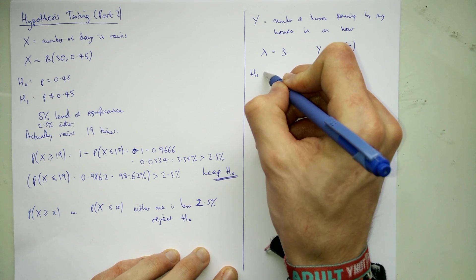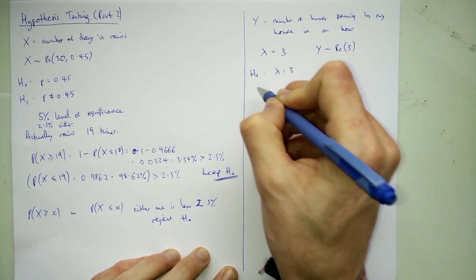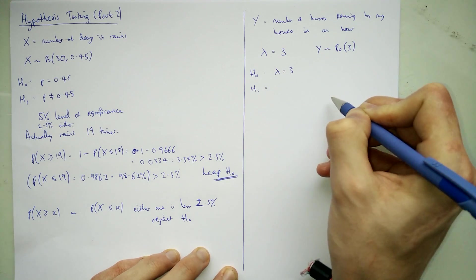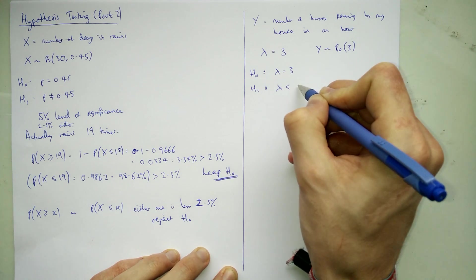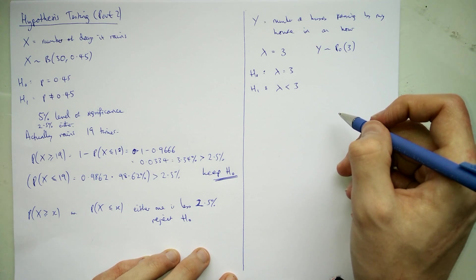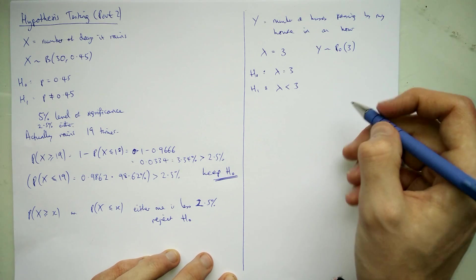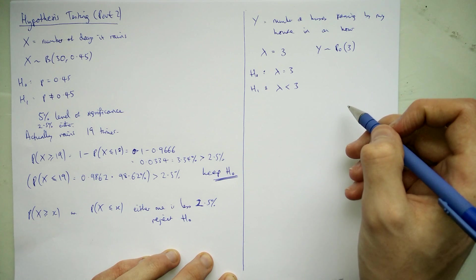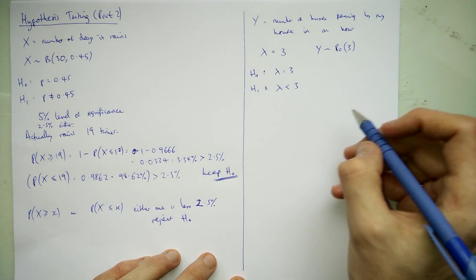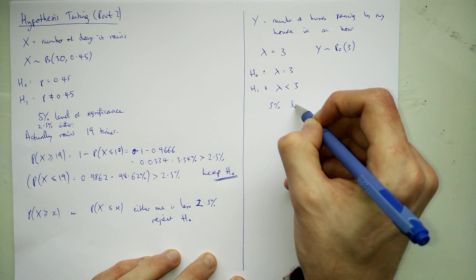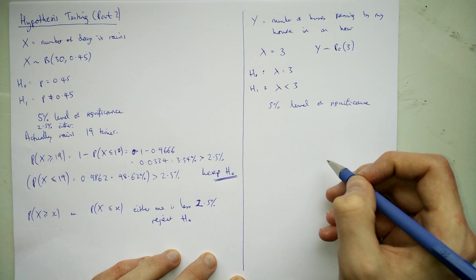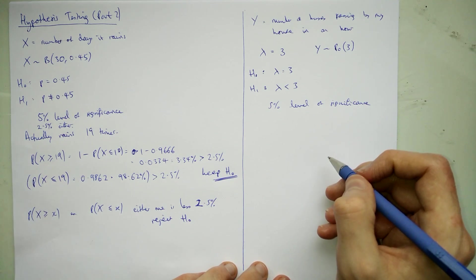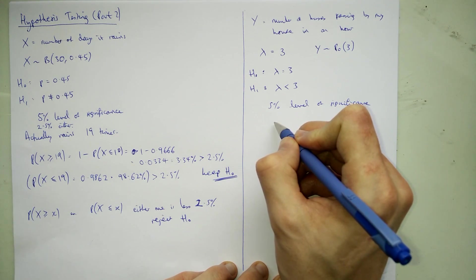So that H0 is that lambda equals 3. Now, I'm counting and I'm not seeing very many at the minute. So this would be a colon, not an equal sign. And so I think this is probably actually slightly more than it is nowadays. It's been reduced bus routes. So we're going with H1 being that lambda is less than 3. We'll do a 5% level of significance again. And I've counted the last hour how many came past and it turned out that it was just 1.